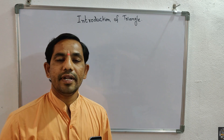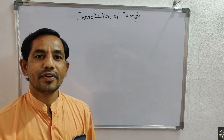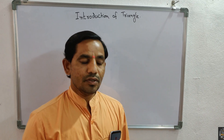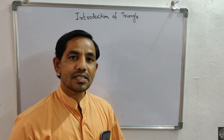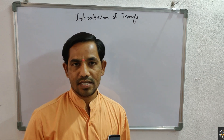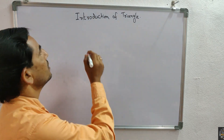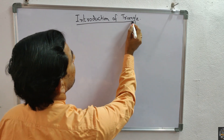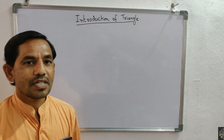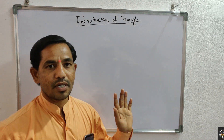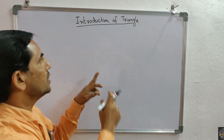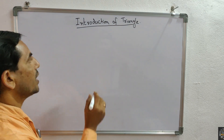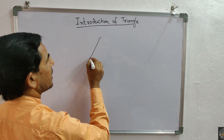Hi everybody, myself Kari Rabbi. I'm taking a mathematics class, CBS syllabus, chapter Triangles. The topic is introduction of triangles. First of all, listen to some introduction. This whiteboard looks like a plane, so I'm drawing one diagram — that is a triangle.